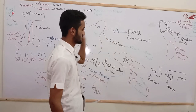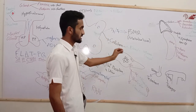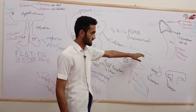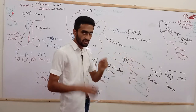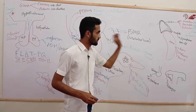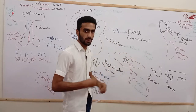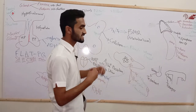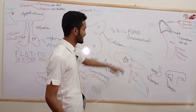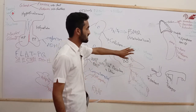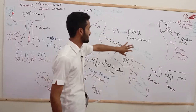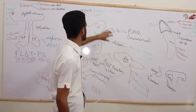Calcitonin takes calcium from the blood and deposits it into bones, increasing bone calcium levels and decreasing blood calcium levels. The antagonist of calcitonin is parathormone.